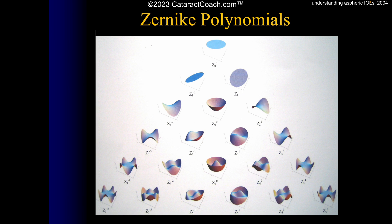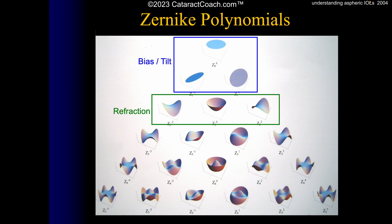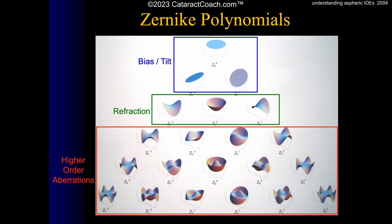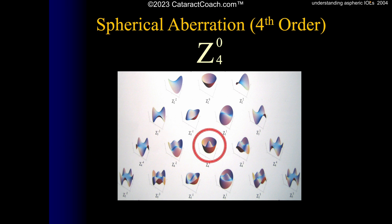Fritz Zernike won the Nobel Prize for describing these polynomials. In the Zernike pyramid, the top represents bias or tilt; the next row includes spherical power and astigmatism — the lower-order aberrations we focus on clinically. The higher-order aberrations are found further down, and right in the center the Z4-zero term is spherical aberration. That is the spherical aberration we're discussing, and this chart shows the degree of image distortion it produces.